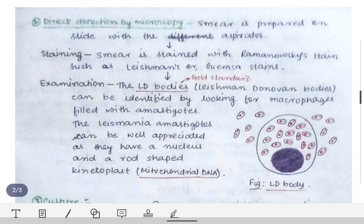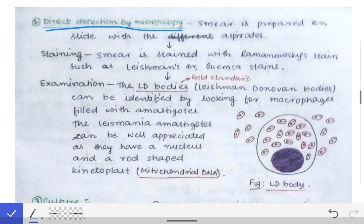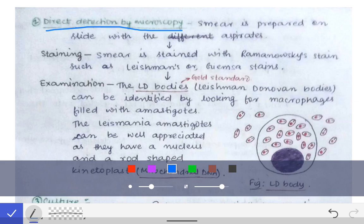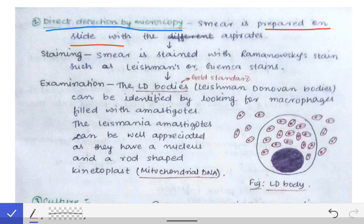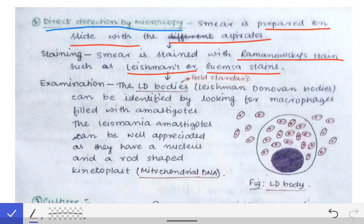For direct detection by microscopy, a smear is prepared on a slide using the collected aspirates — bone marrow aspirate, splenic aspirate, or lymph node aspirate. The smear is stained with Romanowsky stain, which is either Leishman stain or Giemsa stain, and then examined under microscope.